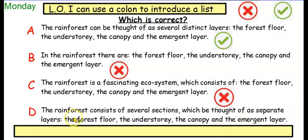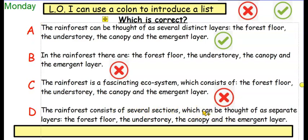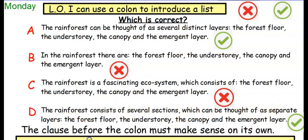And the last one: the rainforest consists of several sections which can be thought of as separate layers: the forest floor, the understory, the canopy and the emergent layer. I think that one is true because you've got an independent clause before the colon. So that's our reminder — the clause before the colon must make sense on its own.